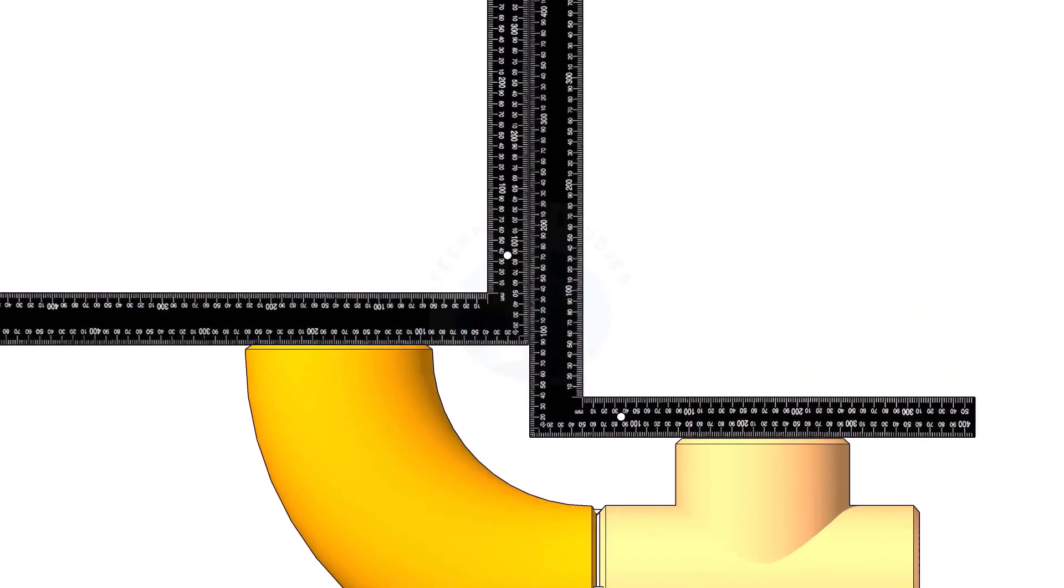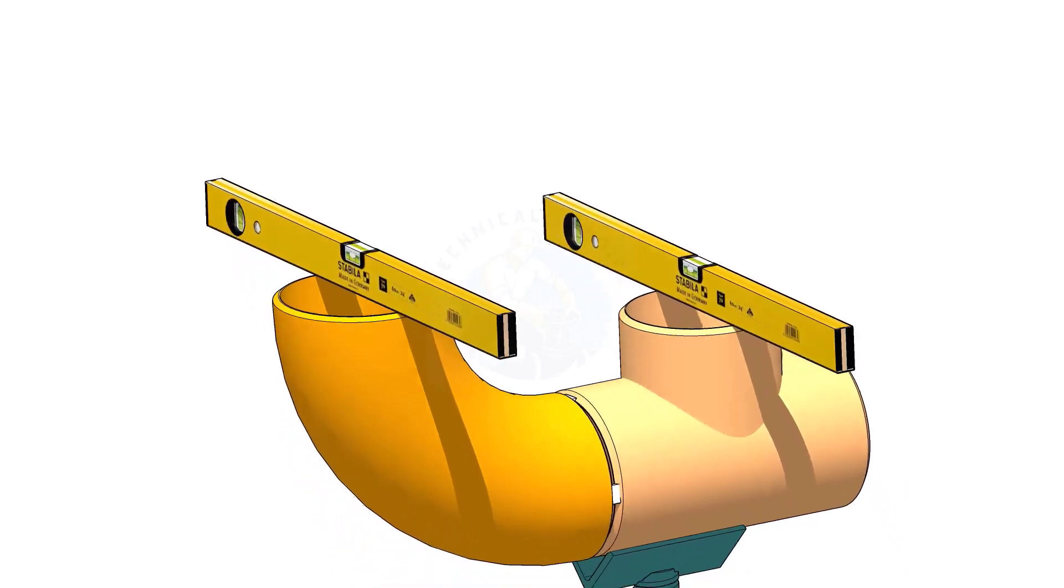When you check a T to elbow fit up, hold the right angles as shown and check the parallel. If the parallel is correct, level the T face and check the level of the elbow face.